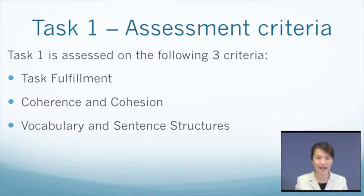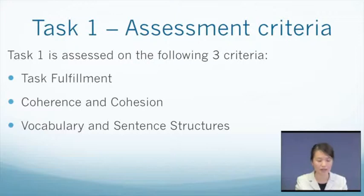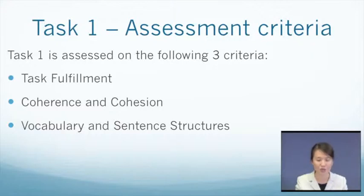Now let's see how your tasks are assessed. Task 1 is assessed on the following three criteria. Number 1, task fulfillment — you can ask yourself: have you followed the instructions exactly? Have you given a clear, accurate and relevant description of the information? Number 2, coherence and cohesion — it is about whether the writing is well organized and the sentences are logically linked. Number 3, vocabulary and sentence structures — you have to demonstrate to your examiner that you can use a variety of vocabulary and sentence structures.